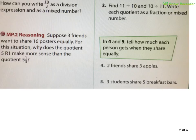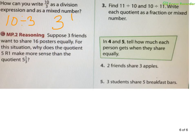Let's wrap up. How can you write ten over three as a division expression? I would read it as ten divided by three — that's my expression. Notice: no equal sign. As a mixed number, three goes into ten three whole times, giving me nine. Ten minus nine is one, so I have one left over out of three: three and one-third.